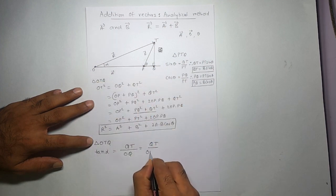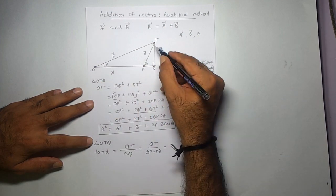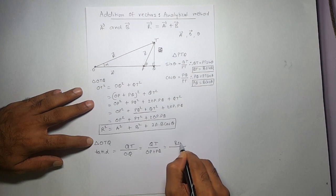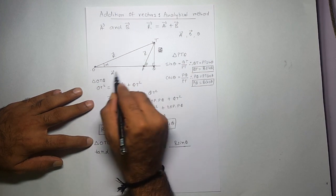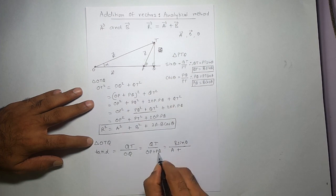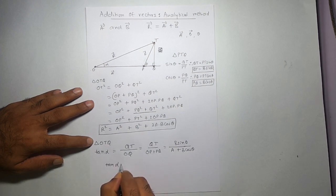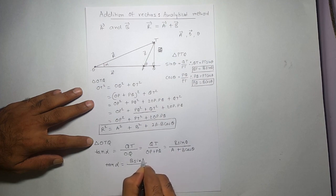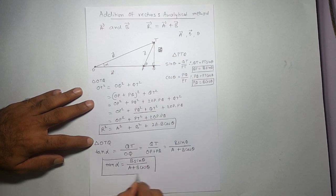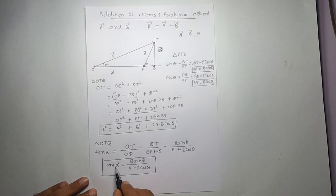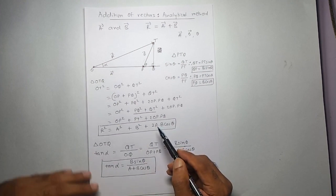In triangle OPQ, tan alpha equals the opposite side QT over the adjacent side OQ. OQ can be represented as OP plus PQ. QT is B·sine theta, and OP plus PQ equals A plus B·cos theta. So tan alpha equals B·sine theta divided by (A plus B·cos theta). I know the magnitude of B, theta, and A, so I can find this quantity.